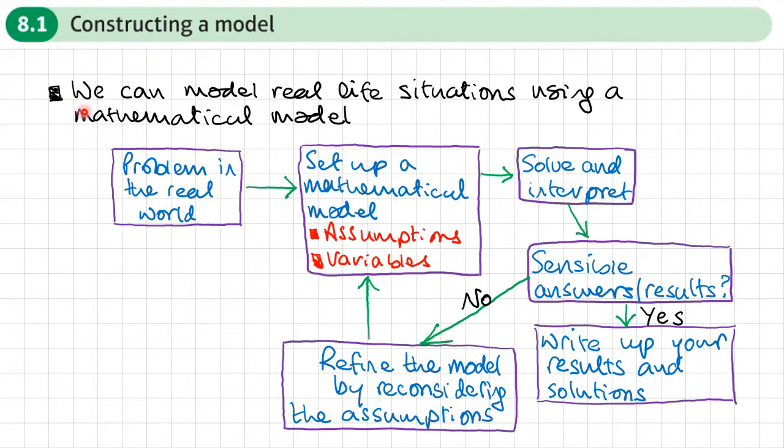What we want to do when we construct a model in mathematics is take a real-life situation and apply some sort of model to it. That model may be an equation or a formula. First of all, we would observe what the problem is in the real world. For example, this might be trying to calculate the distance that a tennis ball goes after the tennis player has hit it.